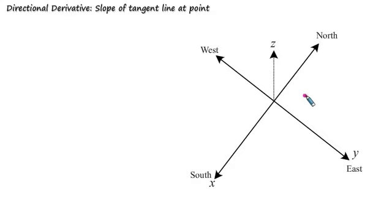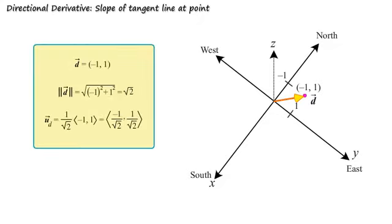Let's try another direction. The vector that points from the origin to the point (-1, 1) lies in a northeastern direction. We'll call this vector d. We find the unit vector that points in the direction of vector d.